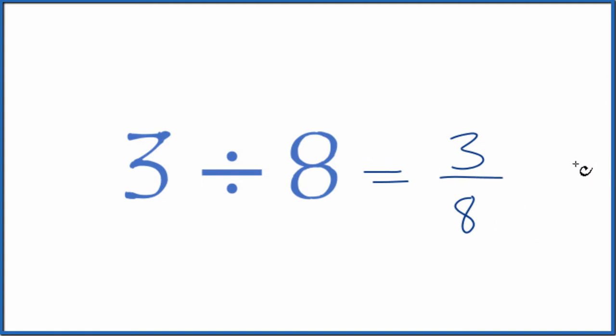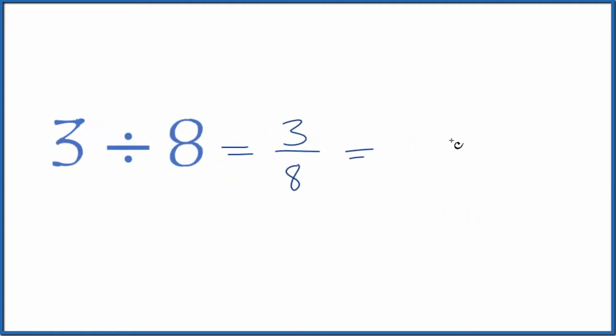We could also on our calculator just divide 3 by 8. That's another way to do it. 3 divided by 8 is 0.375. That's the same value as 3 divided by 8, the fraction, and 0.375. They all are equivalent to 3 divided by 8.